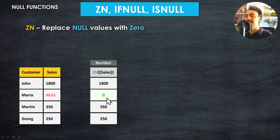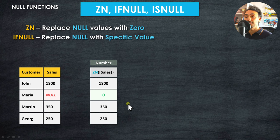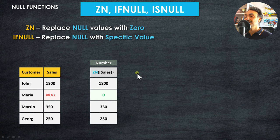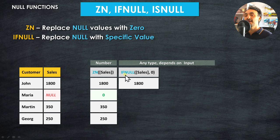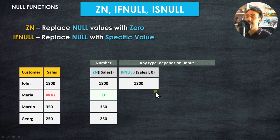ZN is a very quick way to replace nulls, but the problem is we have no control over the replacement value — it will always be zero. To specify our own replacement value, we use the second function: IFNULL. IFNULL can replace a null with a specific value that we define.